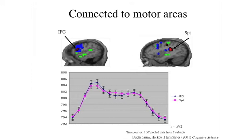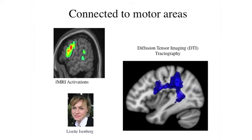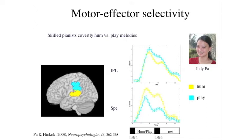The response profile in SPT is strongly correlated with regions known to be involved in speech production, and it's connected to motor areas. Using DTI tract tracing with MRI, seeding from SPT reveals connections between the STS region involved in speech perception and motor areas doing speech motor control. We also assessed motor effector specificity: skilled musicians were asked to listen to novel melodies and imagine either humming them (vocal motor output) or playing them on piano. SPT activation during humming was much higher than during piano playing, suggesting motor effector selectivity — just as seen in monkey work.